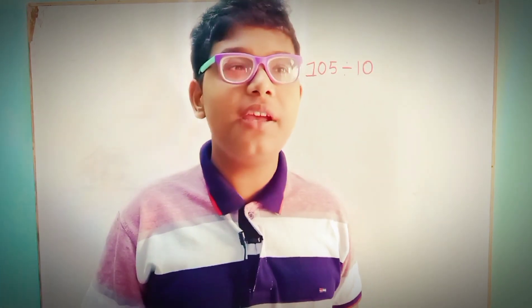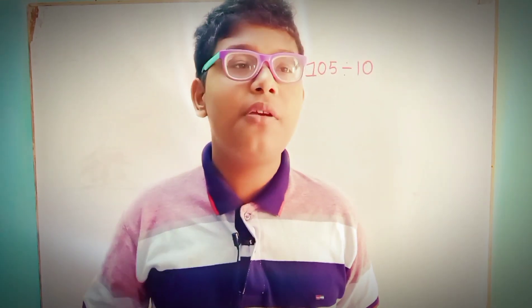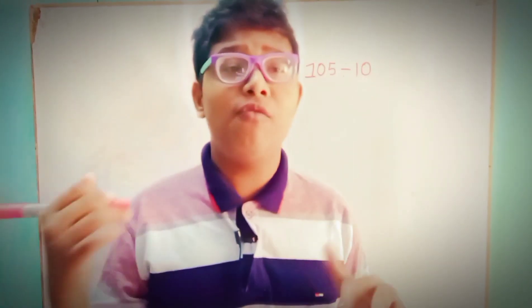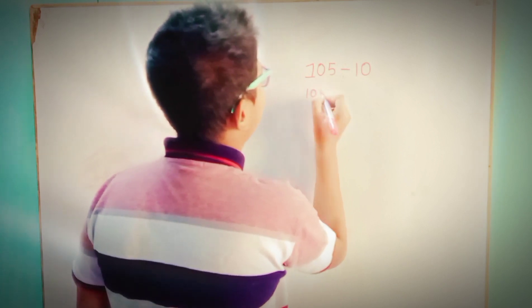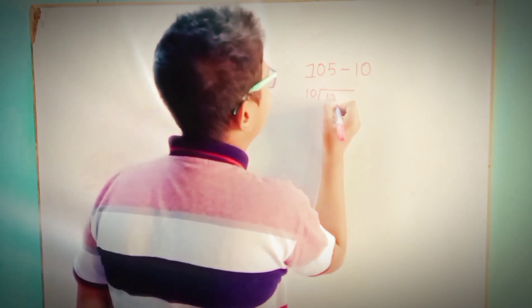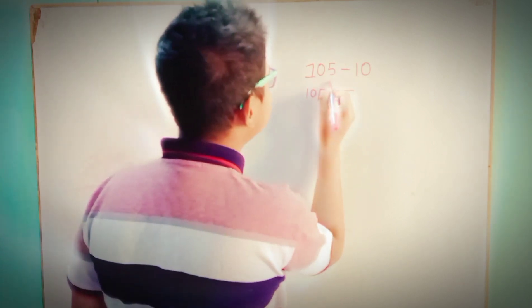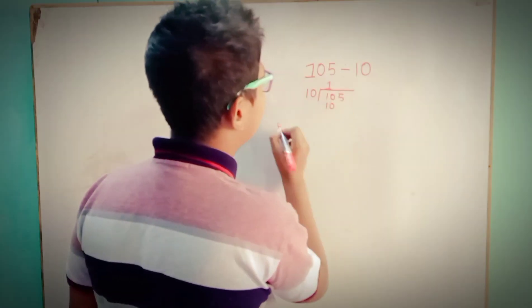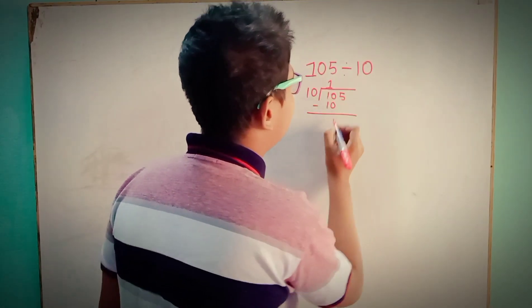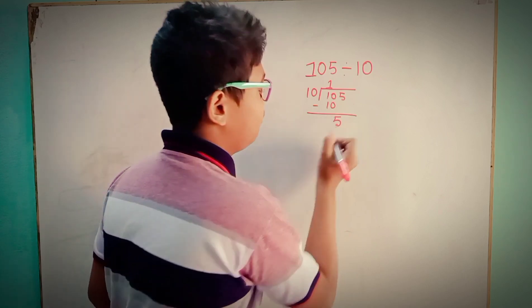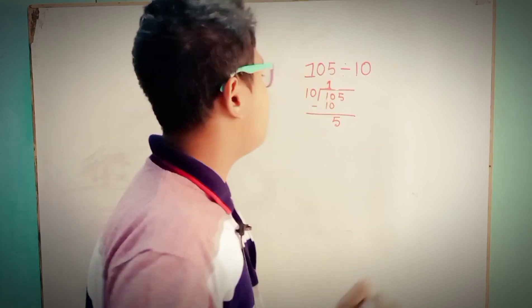Hold on — perhaps you're thinking it's easy stuff. Because 10 is the divisor and 105 is the dividend. 10 ones are 10. Now put down, or move down, 5. As it is smaller than the divisor, so put 0 on top.